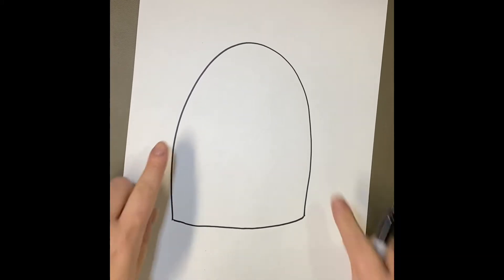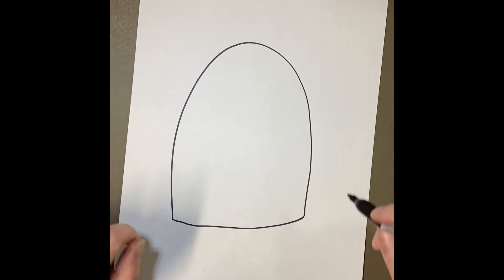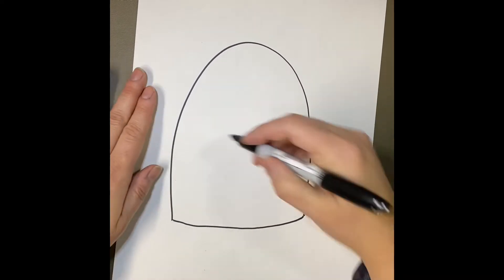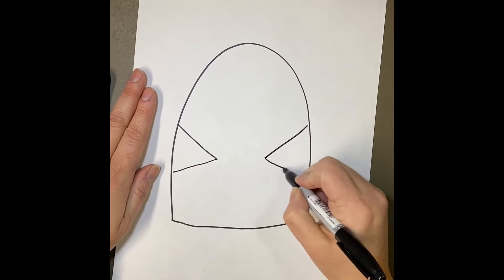Now my penguin has flippers, and the flippers are kind of like triangles. I'm going to make them on the body because the penguin is holding the heart. So triangle like this and a triangle like this. All right, there's my flippers.